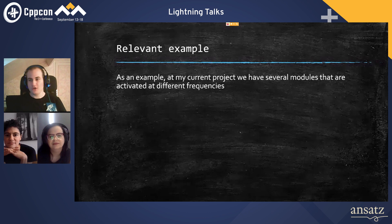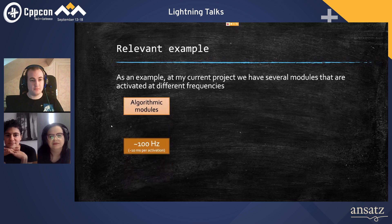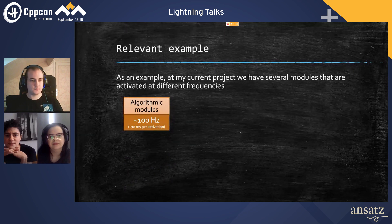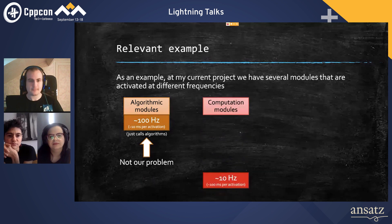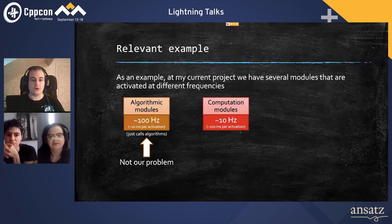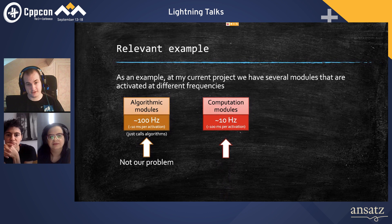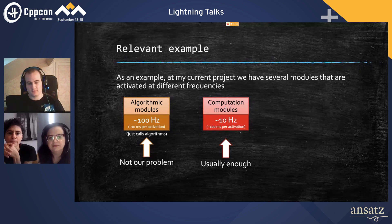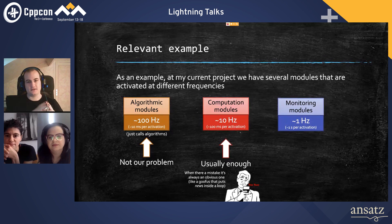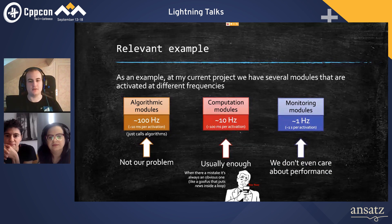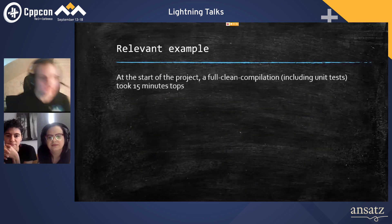As a relevant example, I'll talk about my project at work, which is an embedded project that works with modules. We have three kinds of modules: algorithmic modules that are activated 100 times per second but just call algorithms we do not maintain, so that's not our problem. We have computation modules that are the core of our software, activated 10 times per second, where 100 milliseconds is often widely enough for our operations, so performance is not a problem unless someone puts news inside a loop. And finally, monitoring modules with a frequency of once per second where we don't really care about performance.